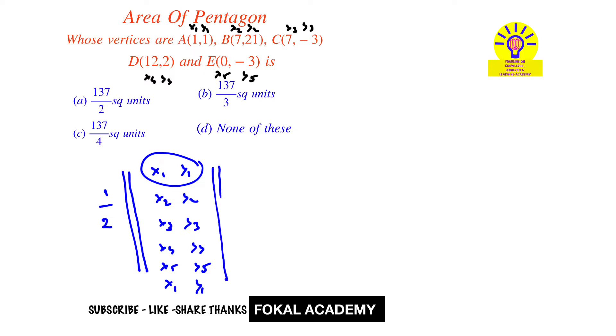Now substitute all the points here. Then it becomes half of (1,1), (7,21), (7,-3), (12,2), (0,-3), (1,1).